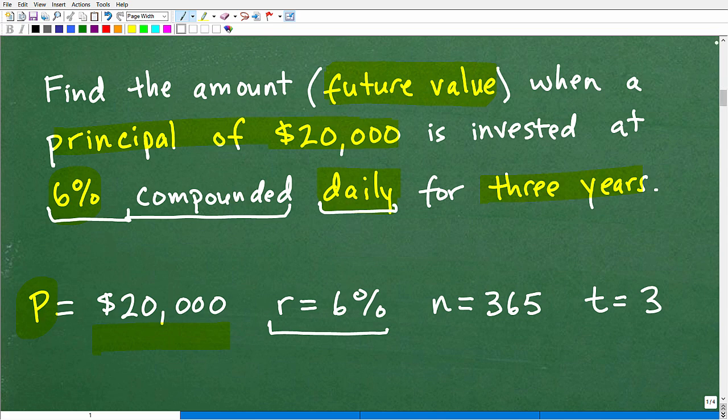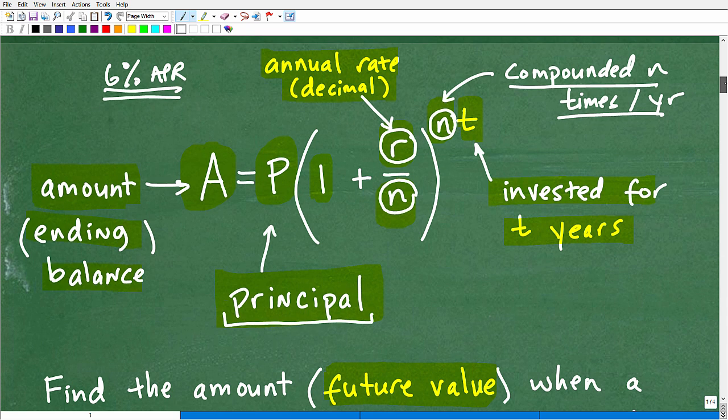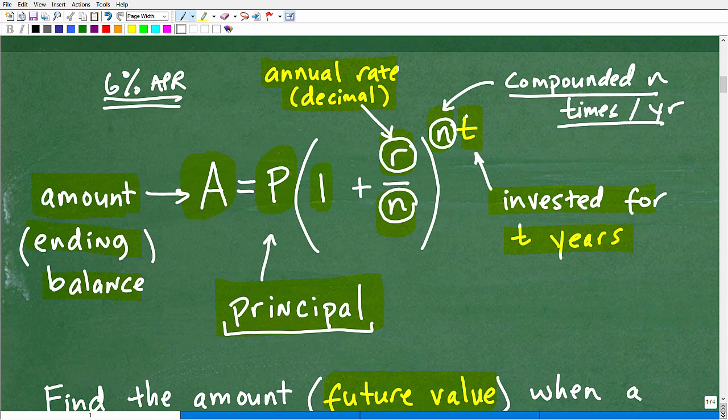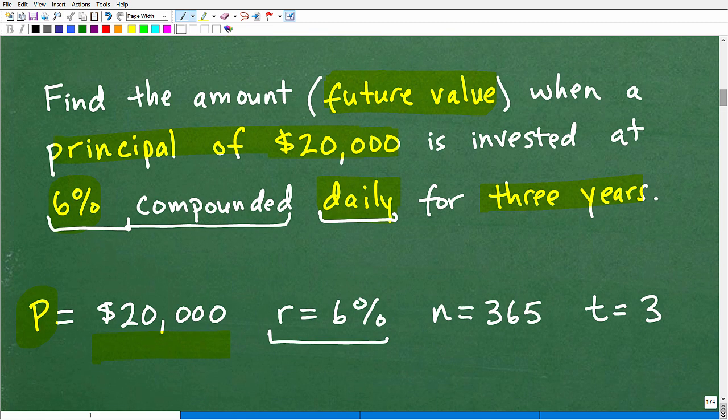N is, go back up here, we have to look what N is. This is how many times this investment is being compounded per year. In this problem, we're saying this is being compounded daily. Let's just assume there's going to be 365 days in a year, not 364.